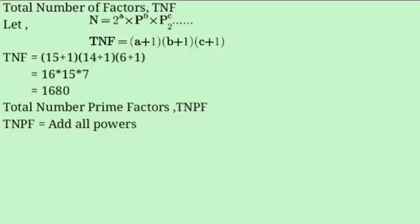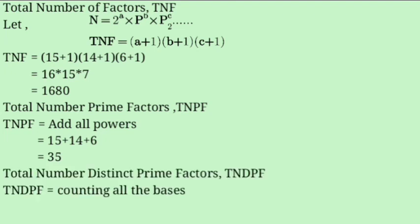Total number of prime factors: add all the powers — 15 plus 14 plus 6 equals 35. Total number of distinct prime factors: count all the bases. We have 2, 3, and 7, so TNDPF equals 3.